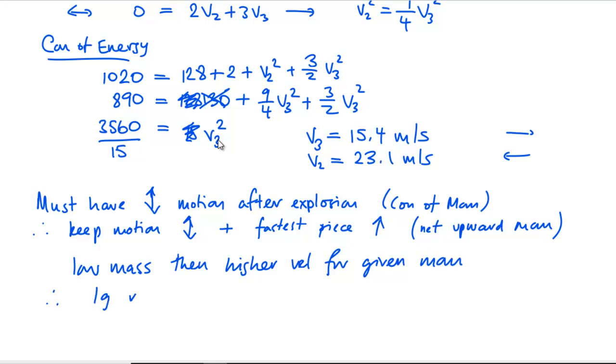Where do we get our biggest bang for our buck? If we got low mass, then you get higher velocity for a given momentum. So we want to have the 1 gram mass traveling fastest, going fastest. And we want to put as much energy into that as possible.